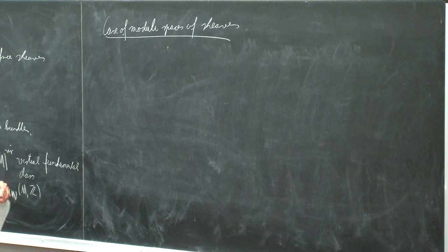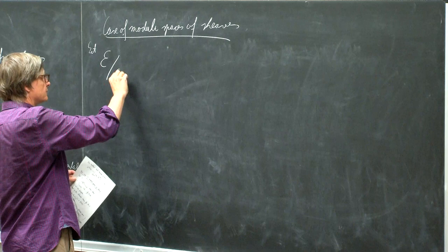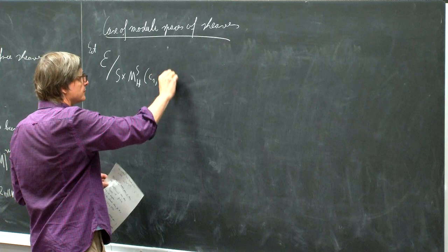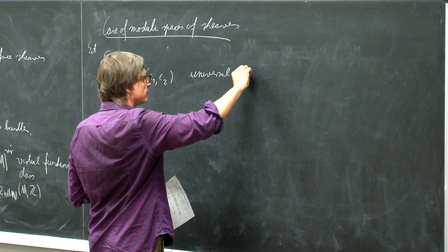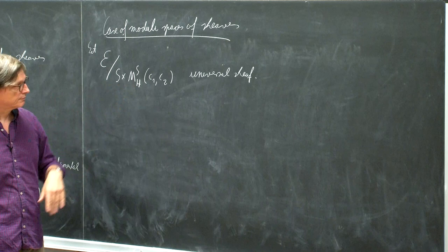For simplicity I will assume that we have a universal sheaf E over S times the moduli space — the universal sheaf — so that any family of such sheaves can be obtained by pullback from it by a map to this moduli space. If you take the universal sheaf and restrict it to S times a point, this parametrizes the sheaves, so every point corresponds to a sheaf.